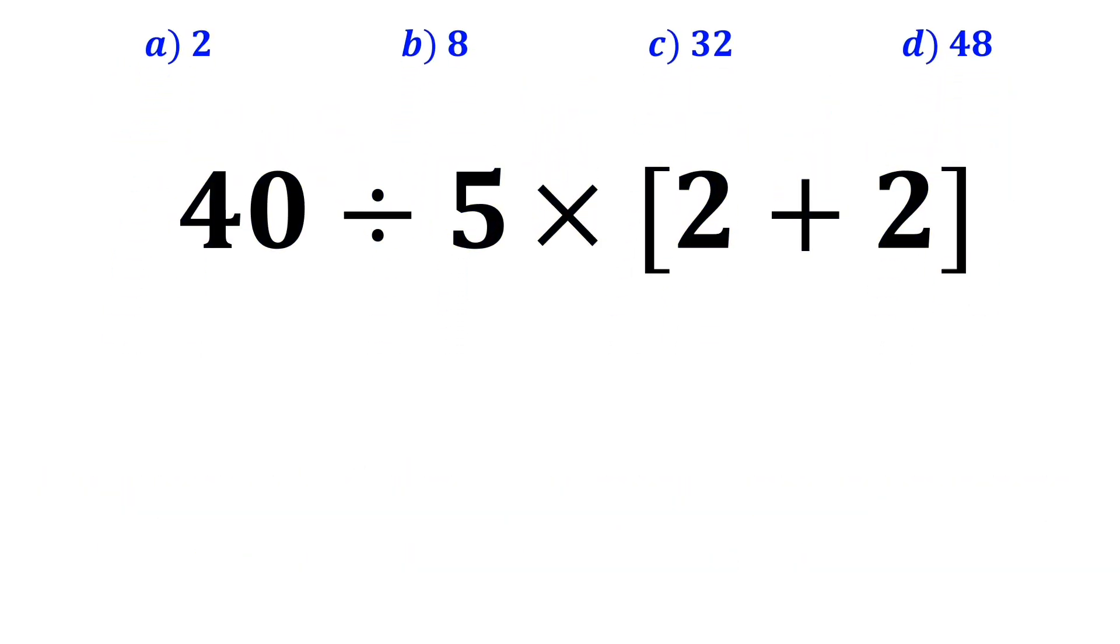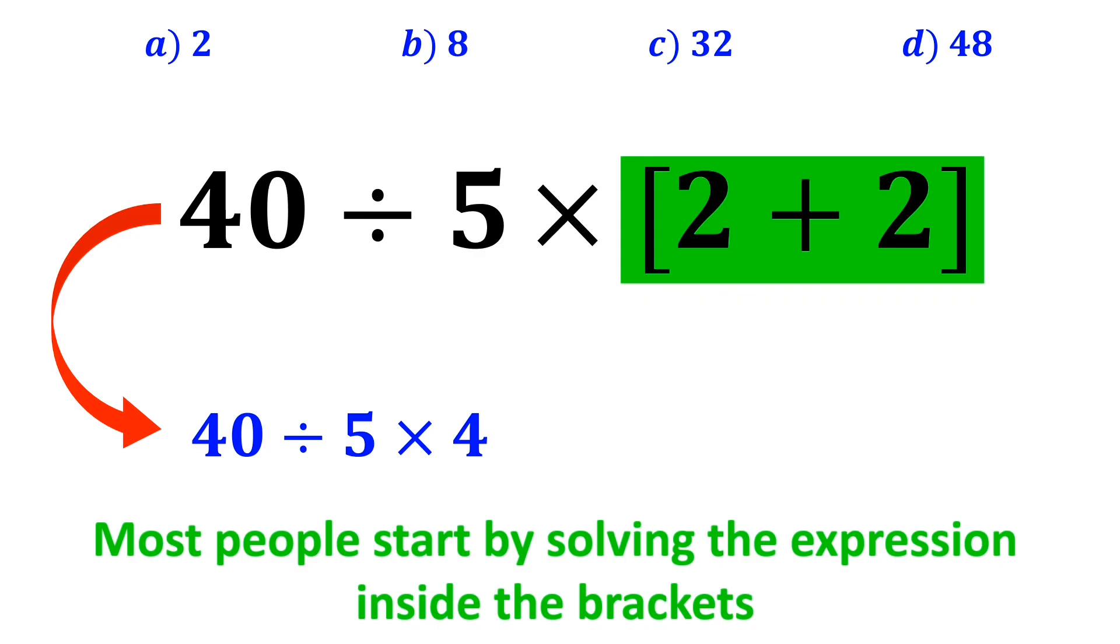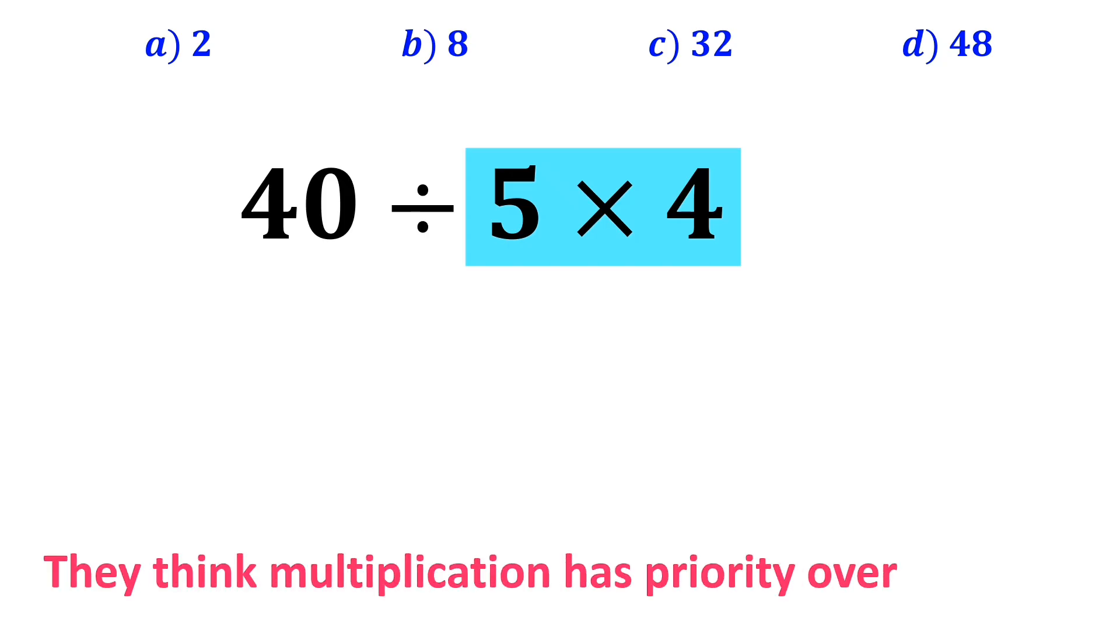Let's take a closer look and solve it together. In the first step, most people start by solving the expression inside the brackets and replace it with 40 divided by 5 times 4. In the next step, they go for the multiplication between 5 and 4, because they think multiplication has priority over division. So this expression simplifies to 40 divided by 20, which finally gives them the answer 2.